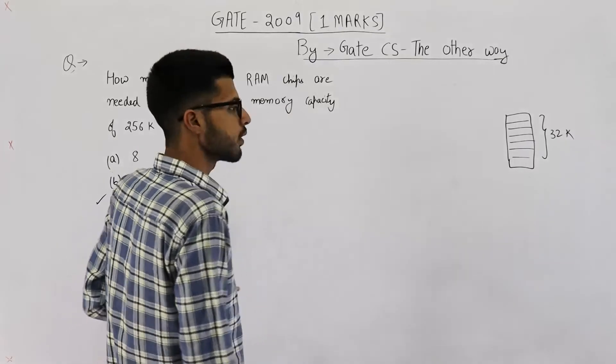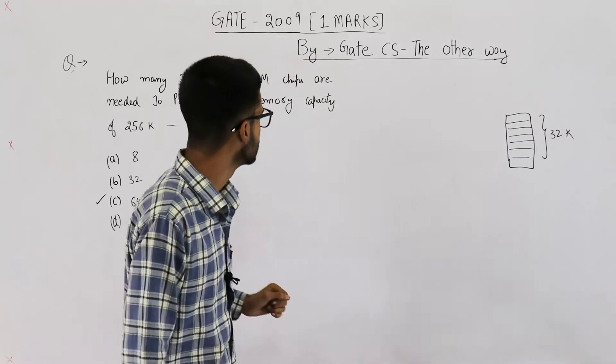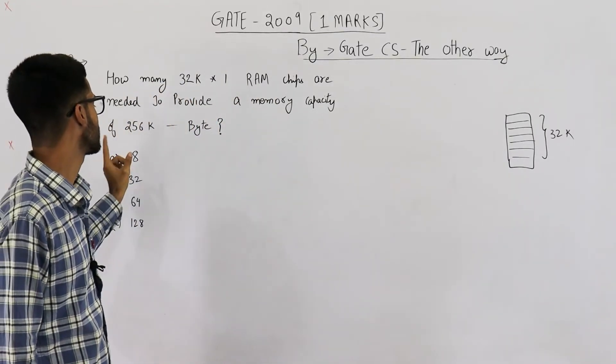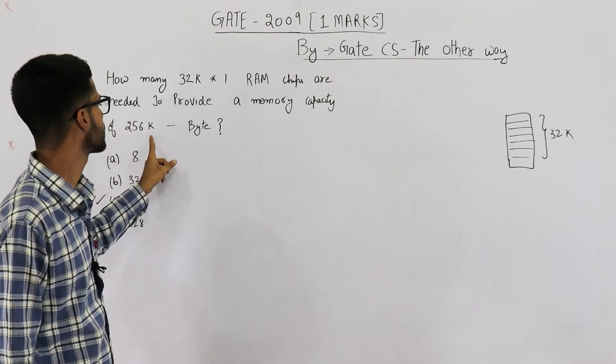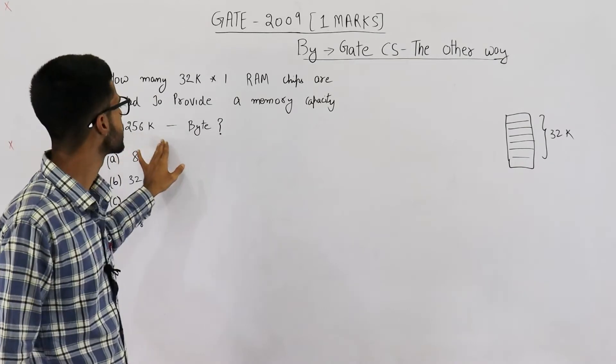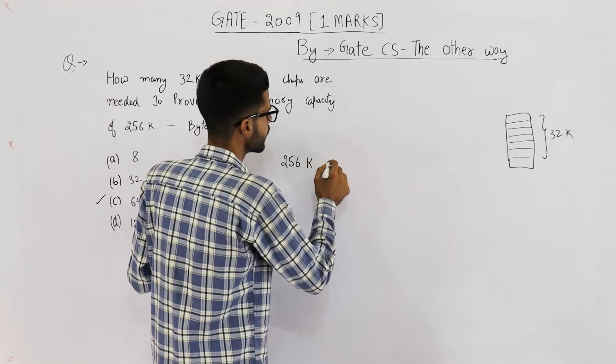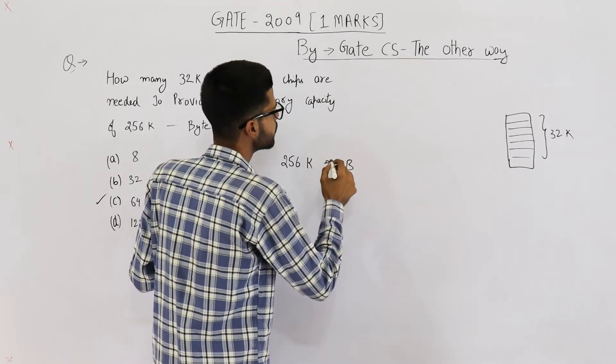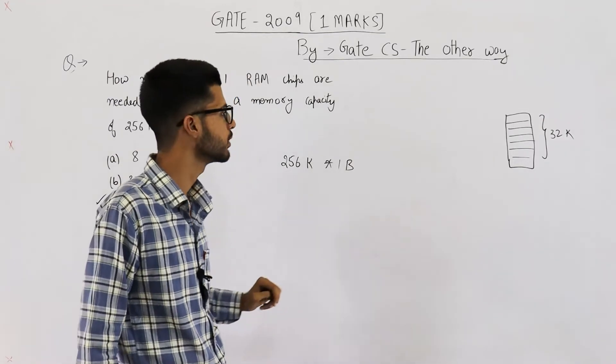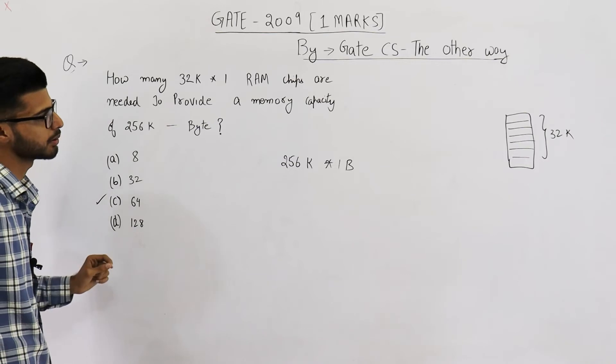Now we have already found out that our answer is 64 chips. But in question they have asked you to construct a memory of 256k byte. Assuming that by saying 256k byte they mean 256k x 1 byte, that means 256k locations each of 1 byte. Let's see how these 64 chips will be placed.